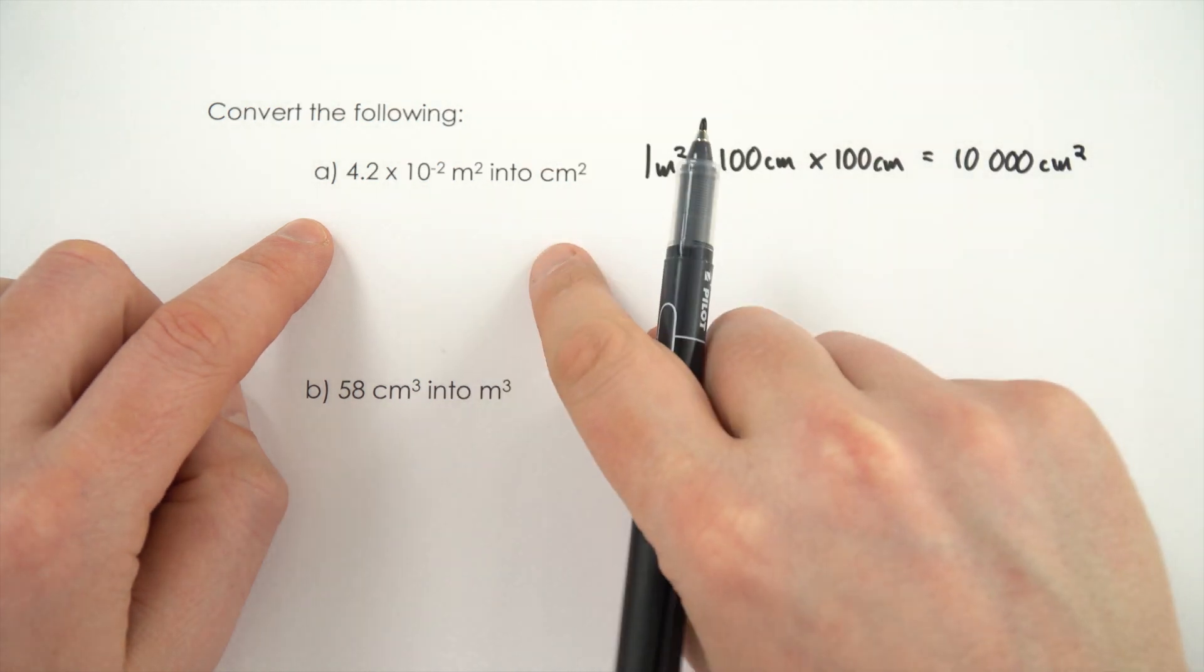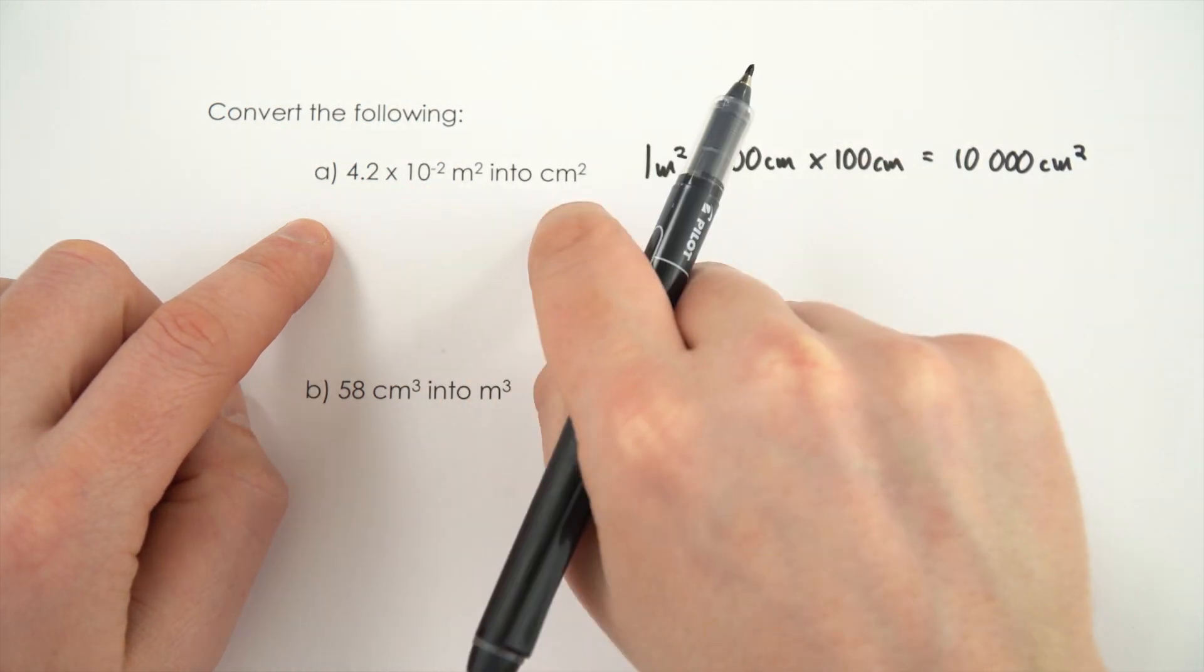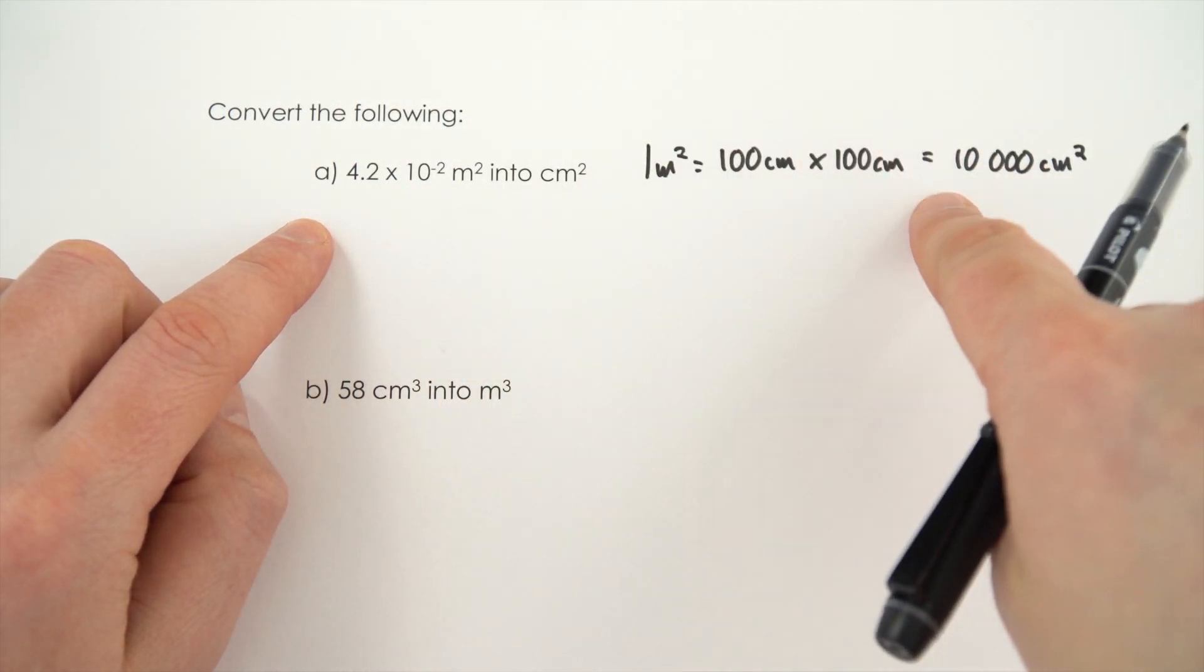So for the first one we're going to go from a square metre into centimetres squared, so we need to multiply by 10,000.